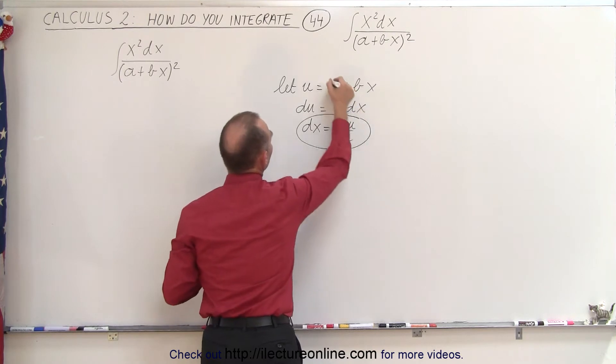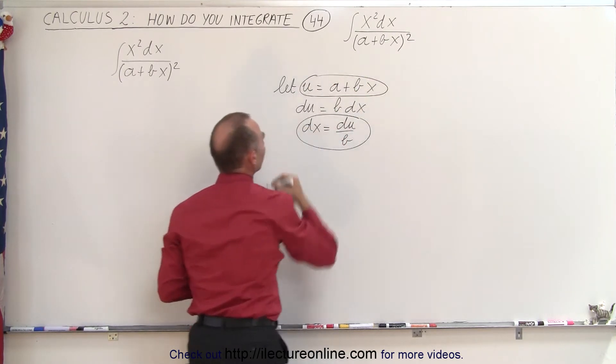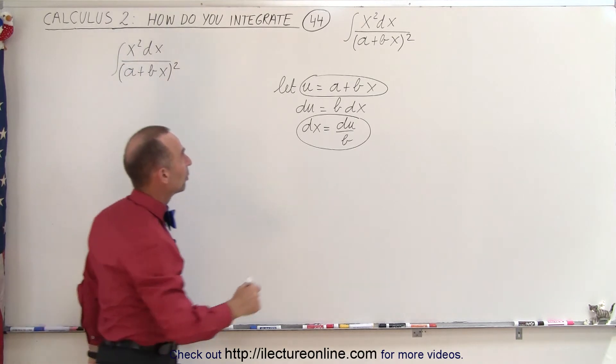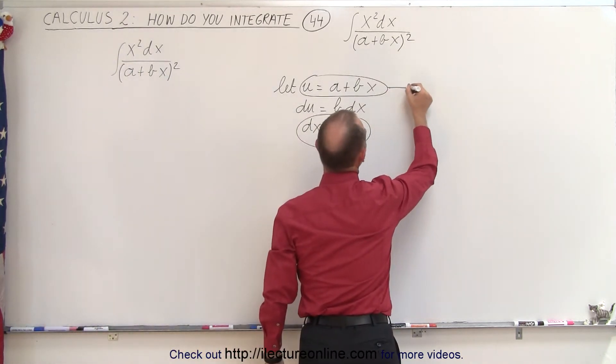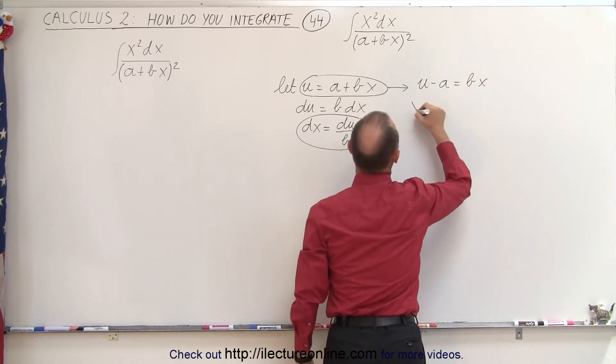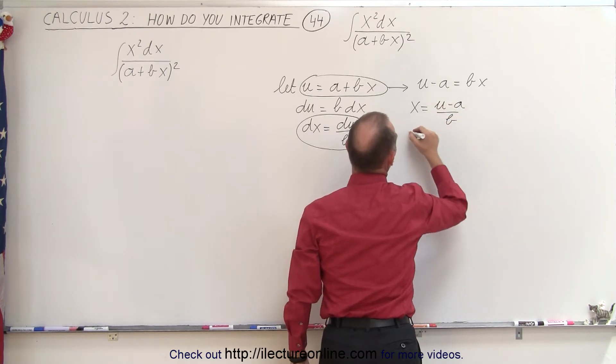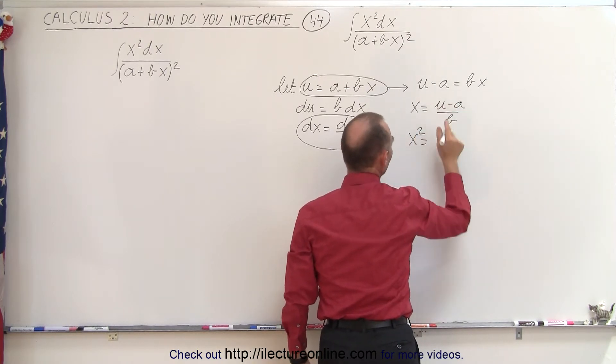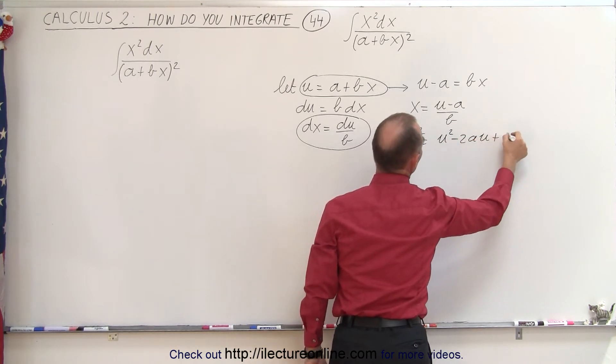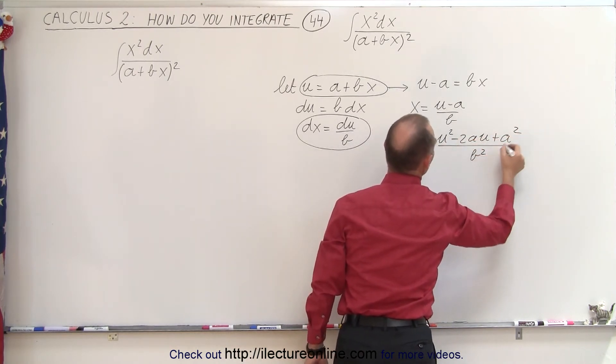And we substitute this and this inside the integral. Then we still have the problem of the x squared, so what we do here is we solve this for x. We have u minus a is equal to bx, or x is equal to u minus a divided by b, and x squared is the square of that, which is u squared minus 2au plus a squared divided by b squared.